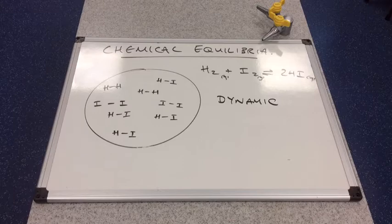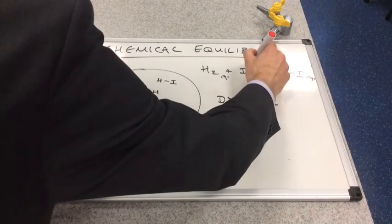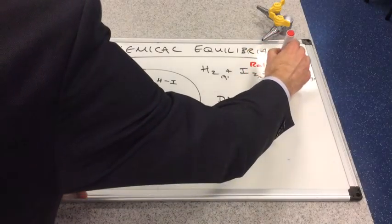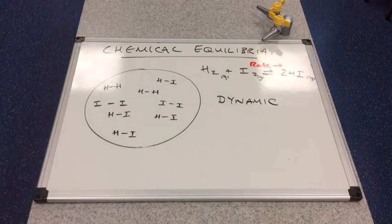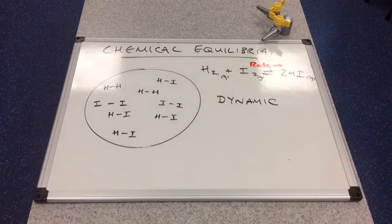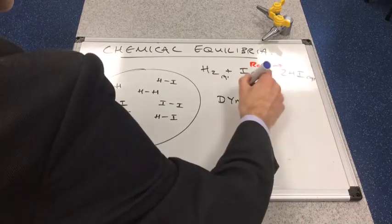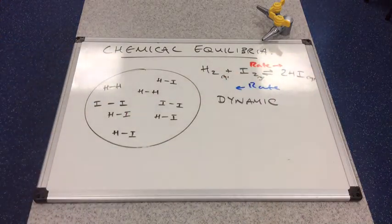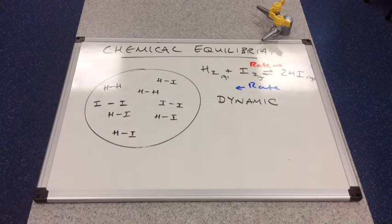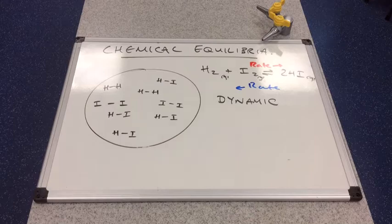Now there comes a point where the rate of the forward reaction is equal to the rate of the reverse reaction. And there's a special name given to that point. That is what we call equilibrium.